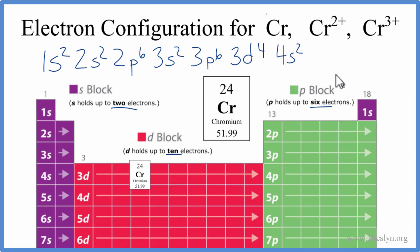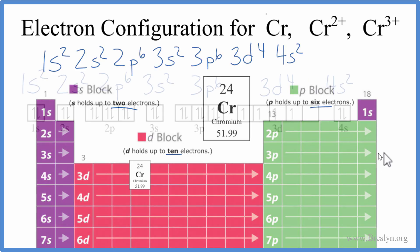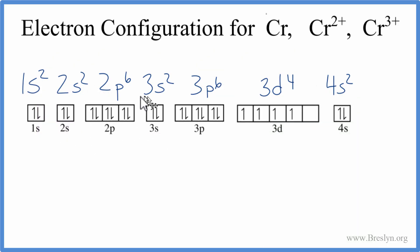But we said chromium is an exception. And to understand why it's an exception, we need to look at the individual electrons in their orbitals. So we can see here that as we get out towards the end of this configuration, we have our 4s2, and then we have 3d4.